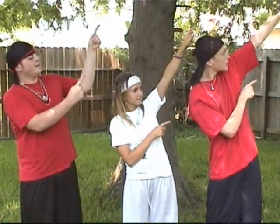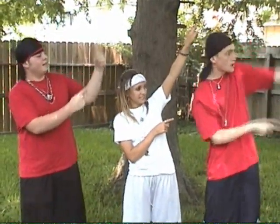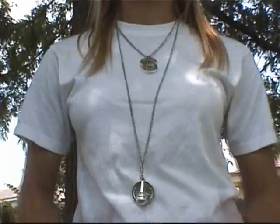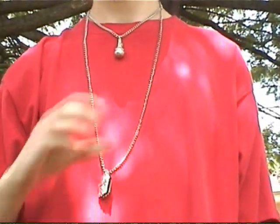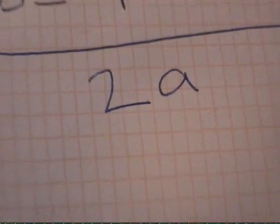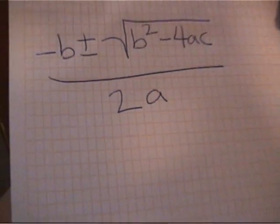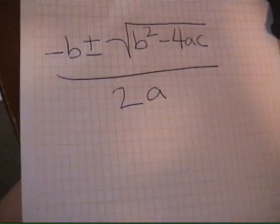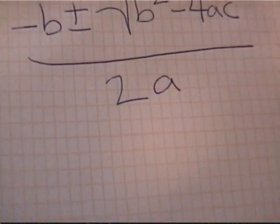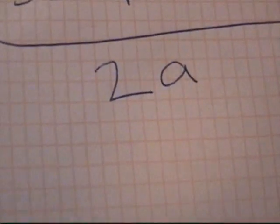Negative B, plus or minus the square root of B squared minus 4AC, all over 2A.